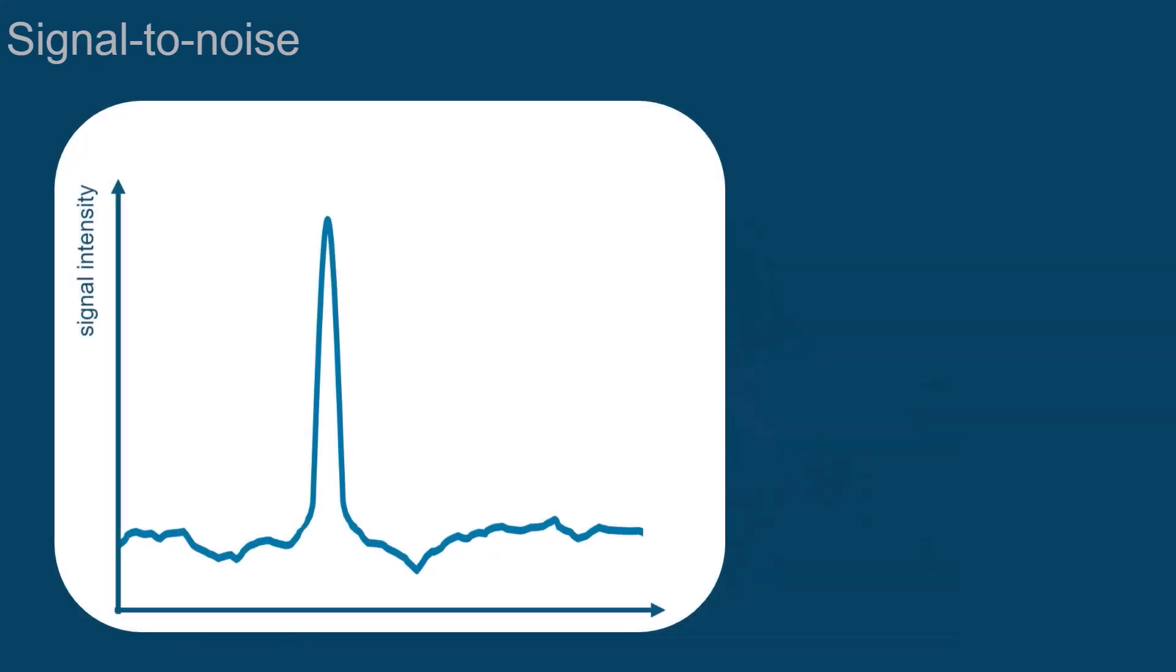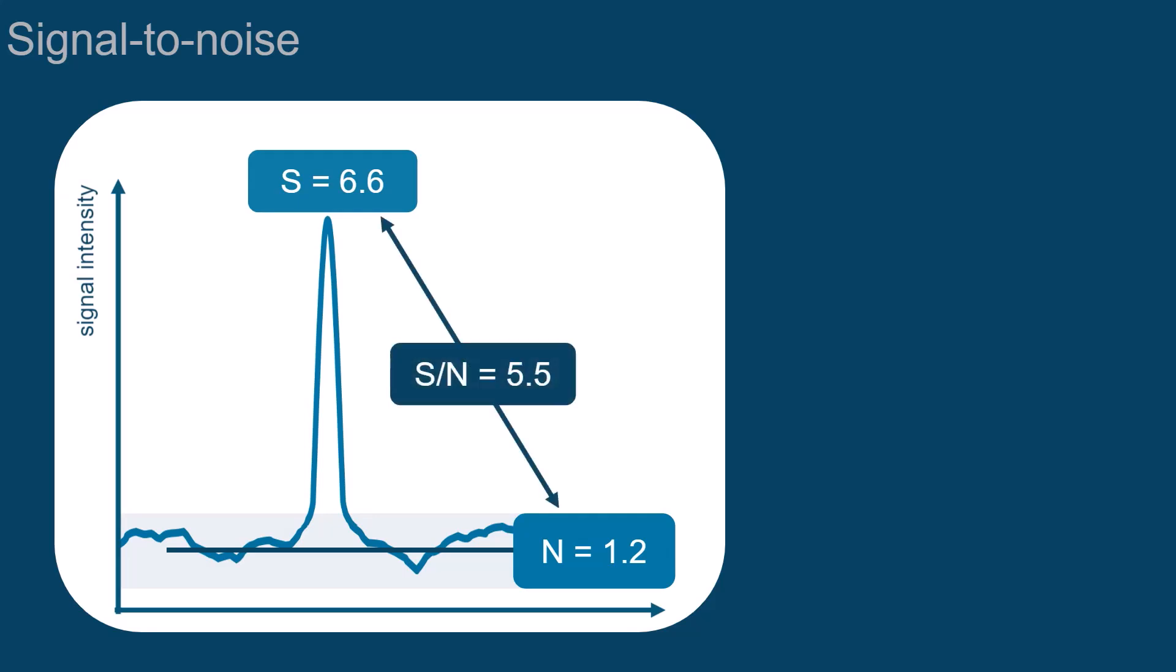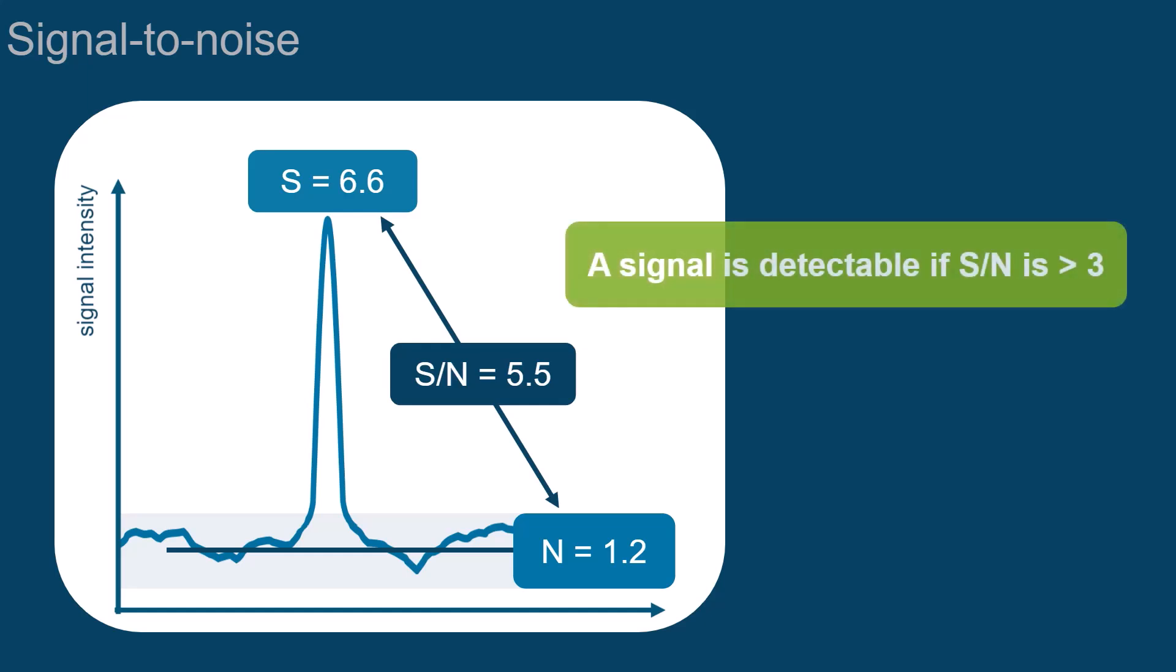To determine the signal-to-noise ratio, you need to read the intensity of the signal and that of the noise level, and then calculate the ratio of the two values. The signal is generally considered detectable when the signal-to-noise ratio exceeds the value three.